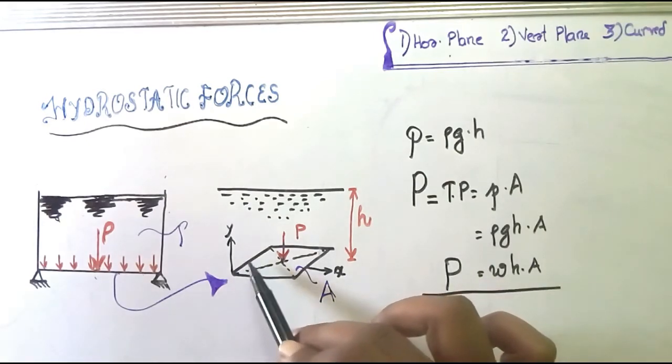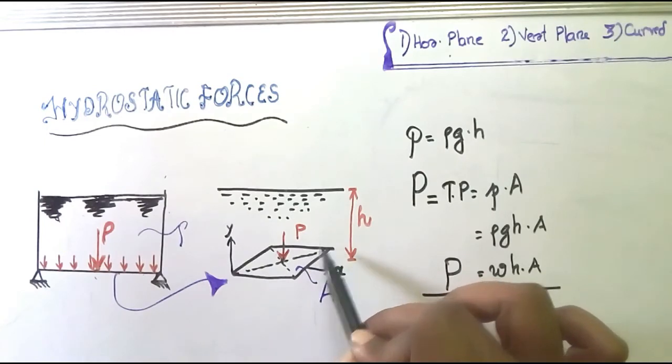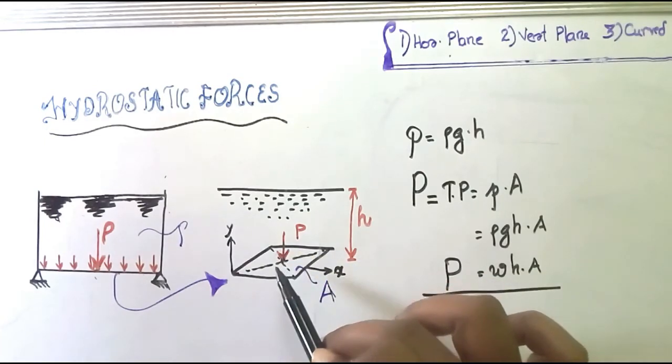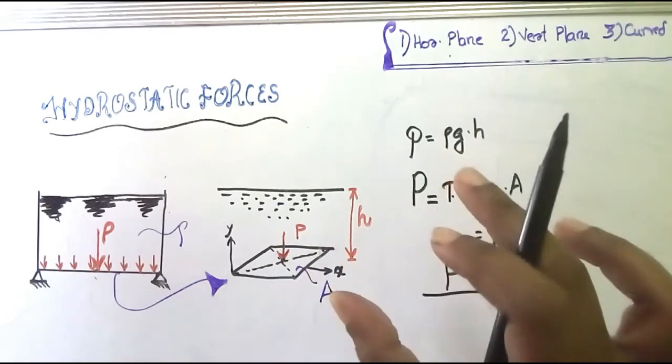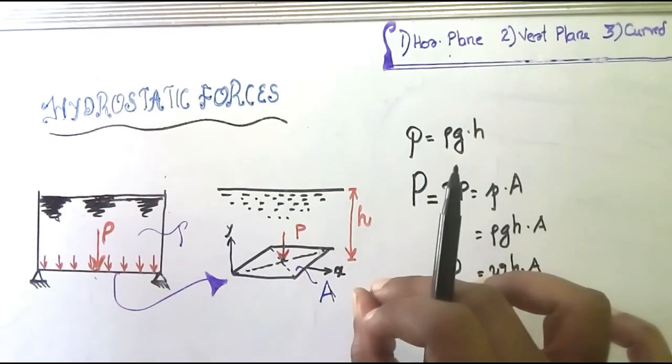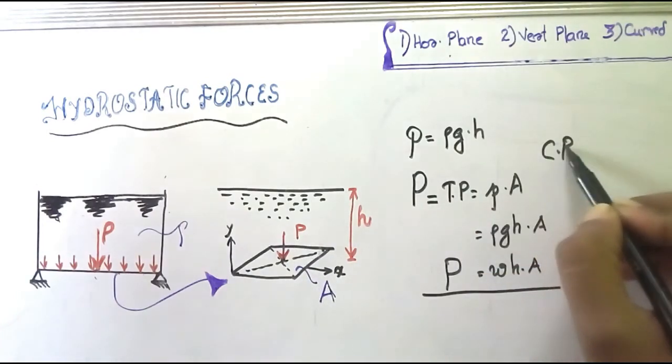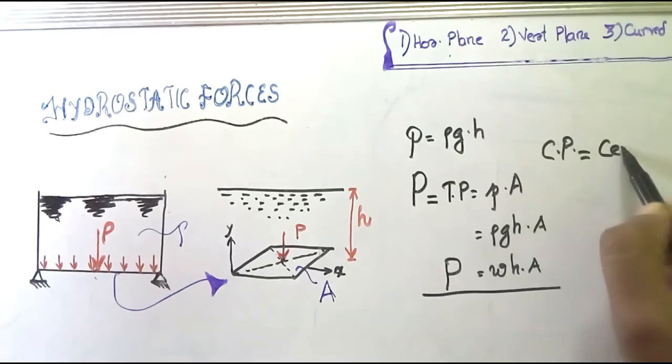All points have the same pressure intensity. Total pressure will act on the centroid of the horizontal plane surface. The pressure on the horizontal surface acts at the centroid.